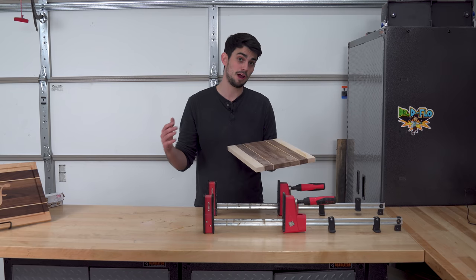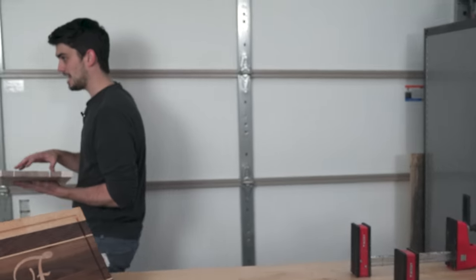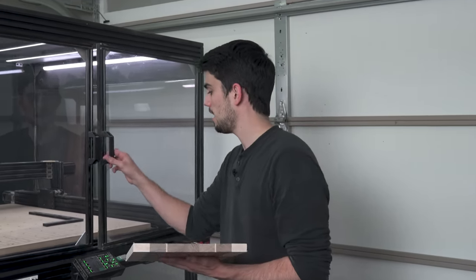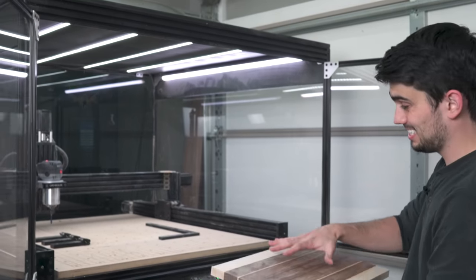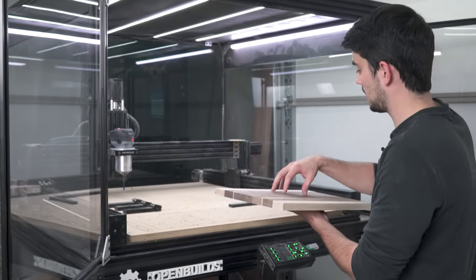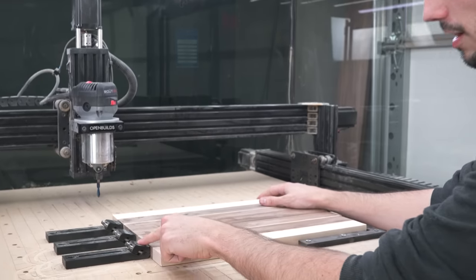My solution to this problem is to use the CNC router to take off just a little bit of material from the top and bottom of the board. The CNC router is square so the board will come out flat. Let's head over to the router to take off that top layer. Now because we need full access to the top of the board, we can't clamp the top so I 3D printed these toe clamps.